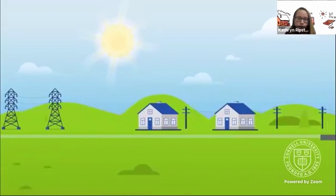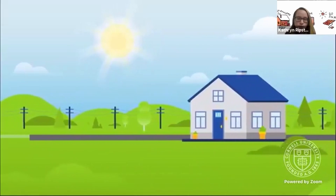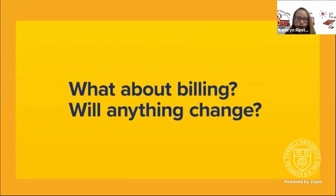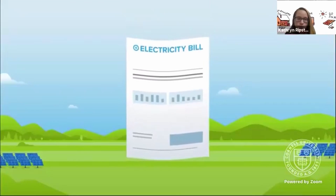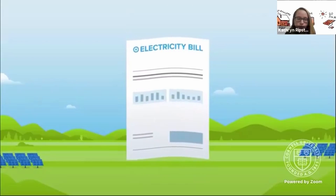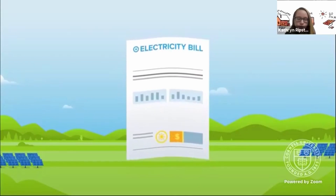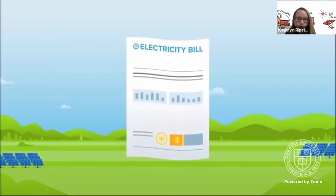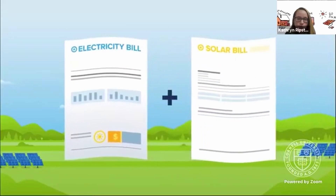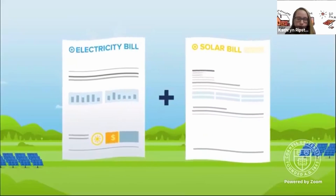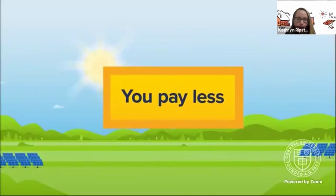You continue to get electricity from your utility without having to install solar panels on your roof or property. You receive your share of solar credits through your utility which will lower your monthly electricity bill. You'll continue to receive your monthly electricity bill from your utility. As a subscriber to a community solar project, the solar energy that your share produces will appear as credits lowering your monthly electricity bill. In most cases you'll receive a separate bill from the solar developer. The credits on your electricity bill will cover the cost of the developer's bill, meaning you'll be paying less than you normally would for electricity.